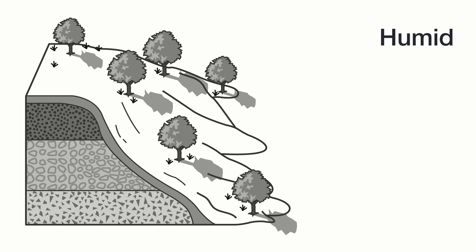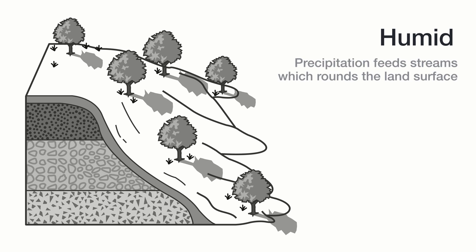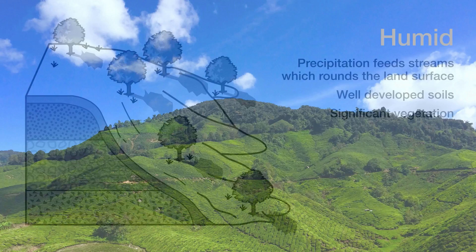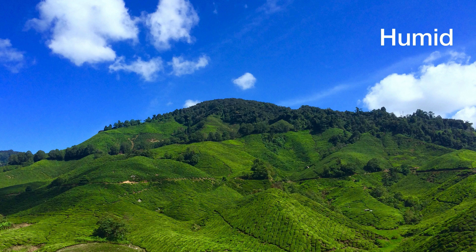Let's take a look at a humid climate. A humid landscape results in precipitation, which feeds streams and rivers, and those weather and erode material off the surface, resulting in rounded land areas. As such, we have well-developed soils, which result from the significant vegetation that's able to grow in these regions. Here's an example of a humid landscape — I can tell because the hills and the mountains are rounded and smooth, and there's lush green vegetation.